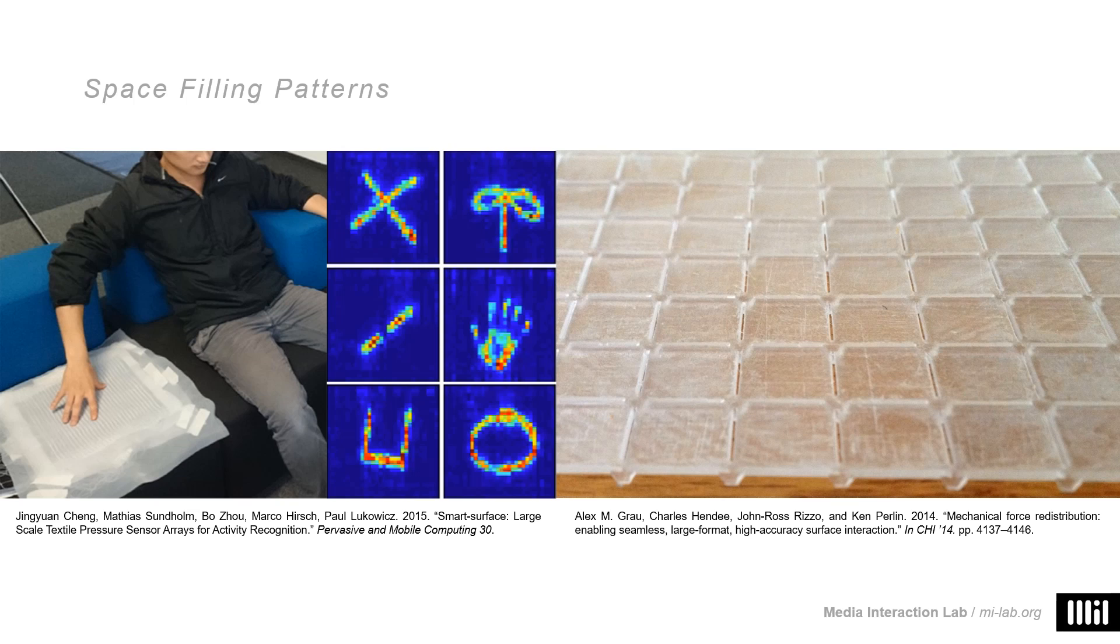Since our work is also about space-filling patterns, let's dive into our motivation for that. Initially, we are coming from this angle of fairly dense and high-resolution sensing matrices that you get when you combine grids like in Jank's work depicted here. However, this isn't always required or possible. Grau presents work dealing with mechanical force redistribution for high-accuracy interpolation between sensor cells. However, this requires a rigid setup and is definitely not applicable for textiles. Furthermore, we don't want to be stuck to square sensor cells. We would like to combine different cell sizes.